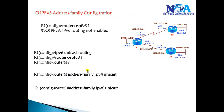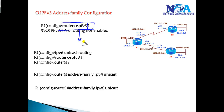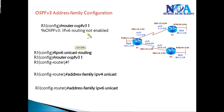The OSPFv3 address family configuration command is 'router ospfv3' followed by the process ID. If IPv6 routing is not enabled — which is the default on most IOS versions — it will give a warning message. You need to enable IPv6 unicast routing before giving this command.